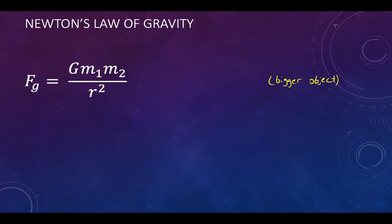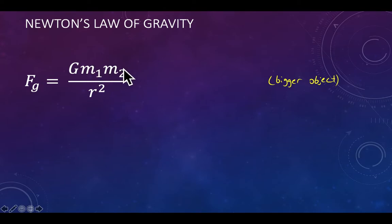Newton's law of gravity states that an object's gravitational force is equal to the gravitational constant capital G, multiplied by the masses of the two interacting objects, divided by the distance between the center of mass of each object squared. For the weight of an object, M1 might be your mass and M2 the mass of the Earth, with R being the distance between you and the center of the Earth. That's how we determine your weight using this more complicated version of the force due to gravity calculation.